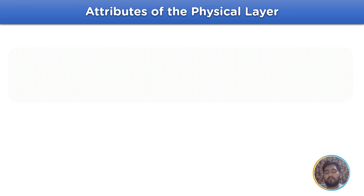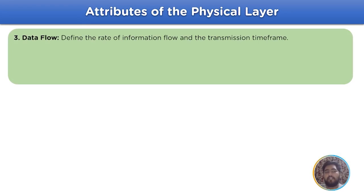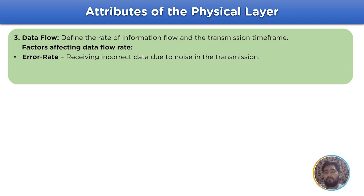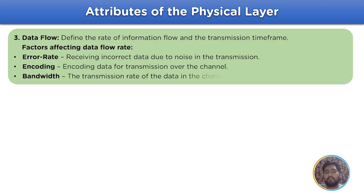The other attributes of the physical layer are data flow which is defined as the rate of information flow and the transmission timeframe. The factors that affect data flow rate are error rate, receiving incorrect data due to noise in the transmission, encoding data for transmission over the network channel, and the last is bandwidth that is the transmission rate of data in the channel.